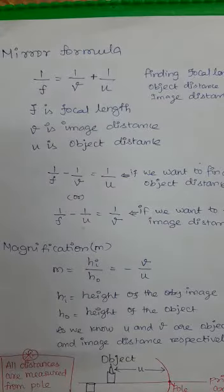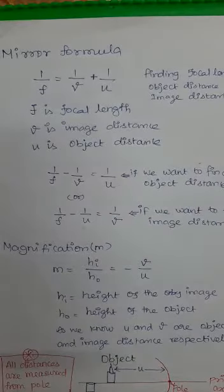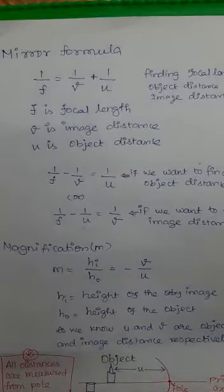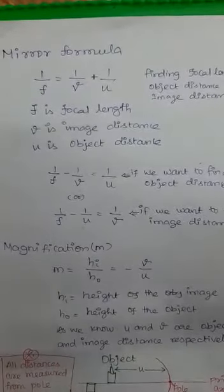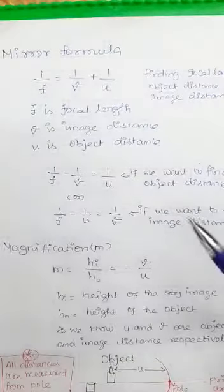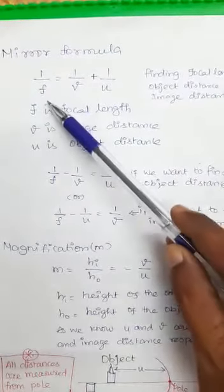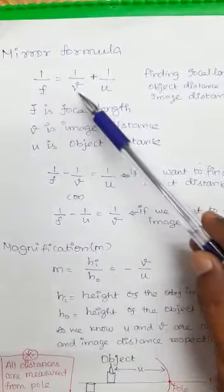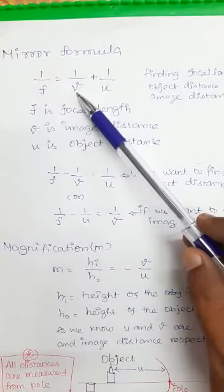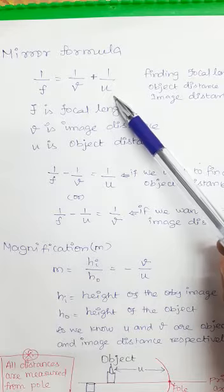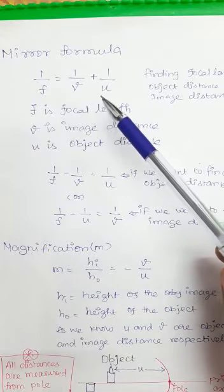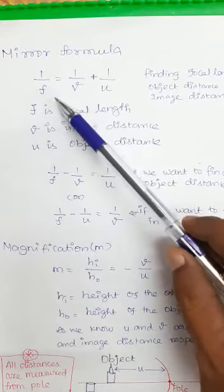Hi everyone, today we are going to see about mirror formula and linear magnification. Mirror formula is a relationship between focal length, image distance, and object distance. So how we can write the mirror formula: